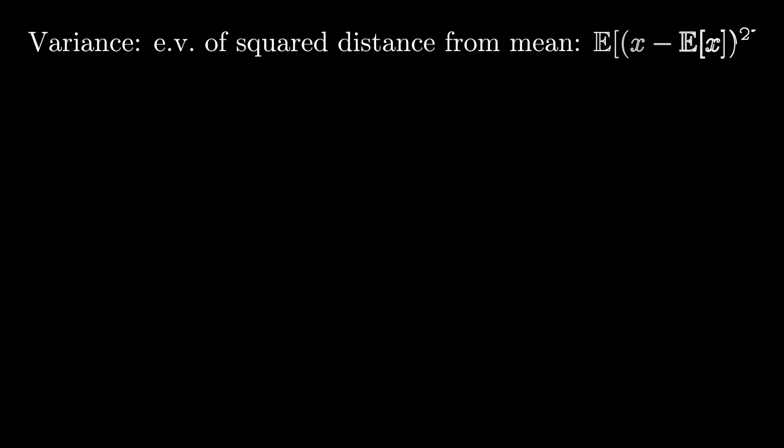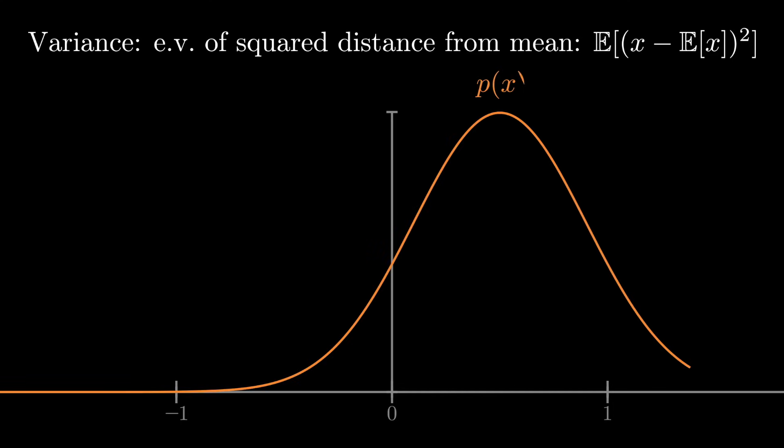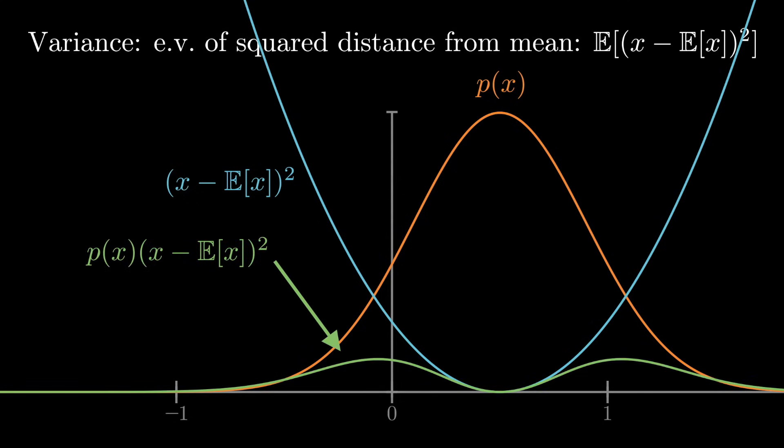While we're talking about expectations, it's also useful to talk about variances. The variance is the expected squared deviation from the mean. Again, we use the same visualization, but now f of x is the parabola centered at the mean.